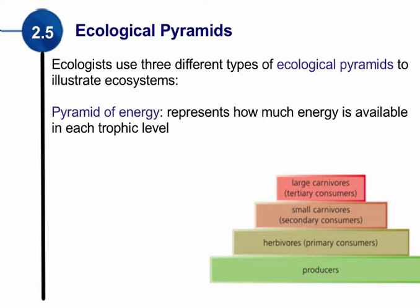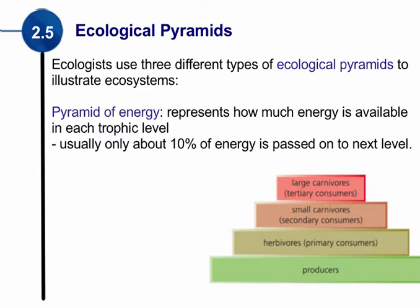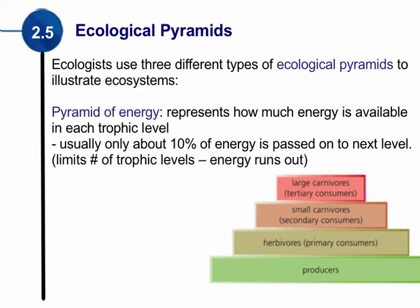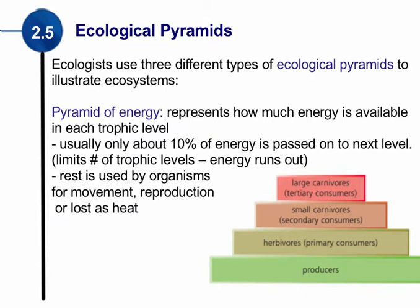As we work our way up, the energy transferred from one level to the next only represents about 10%. So only about 10% of the producers' energy gets passed on to the herbivores, and that 10% gets passed on to the small carnivores, etc. Most of the energy is used up, which limits the number of trophic levels. We only work our way up to the large carnivores because we eventually run out of energy. The rest of the energy is used up by the organisms for things such as movement, heat, or reproduction. That 90% is used up and only 10% is passed on.